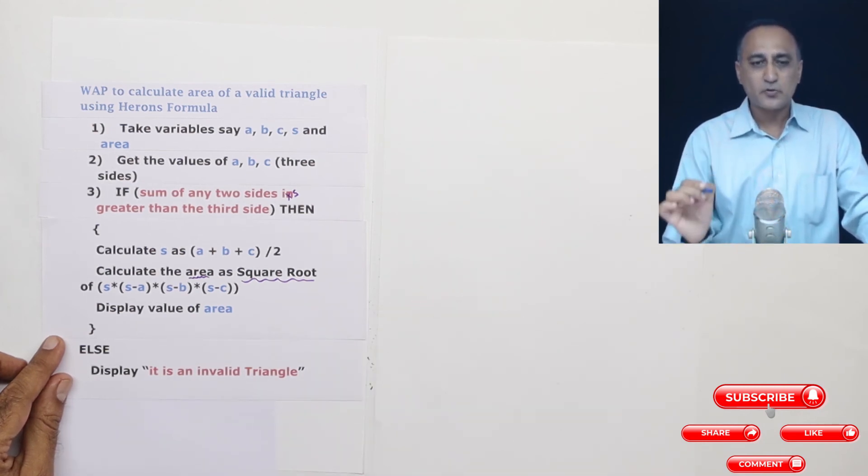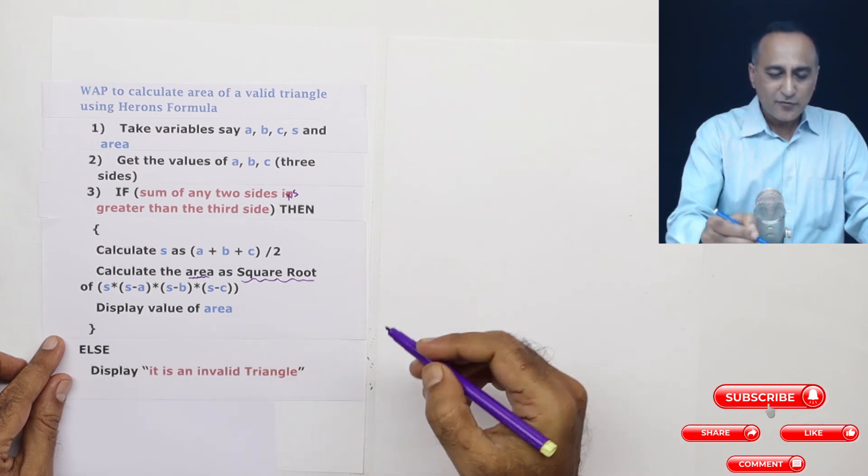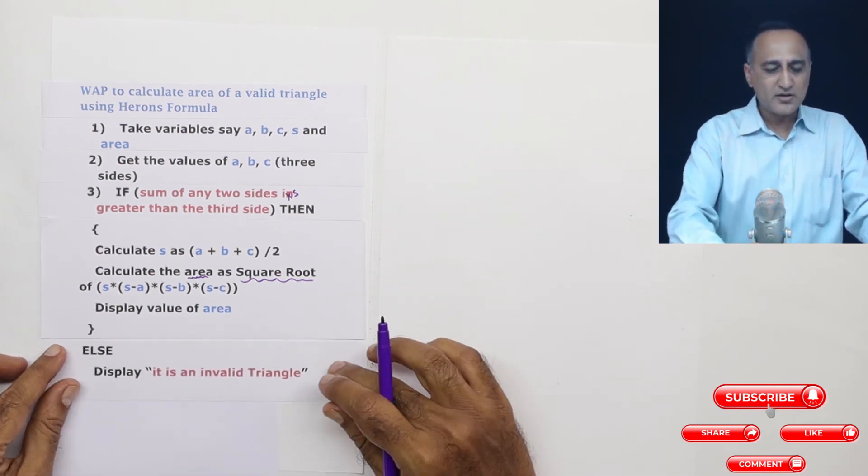We are not writing the code for square root because almost all modern programming languages have something called library functions or library procedures which if you pass a number to them it is going to give you the square root.